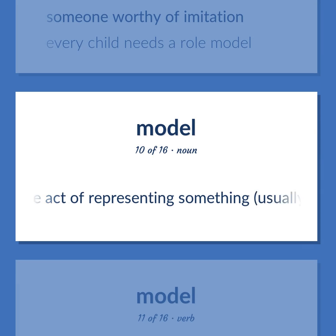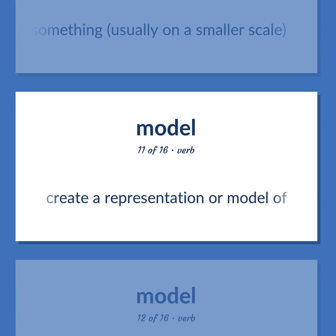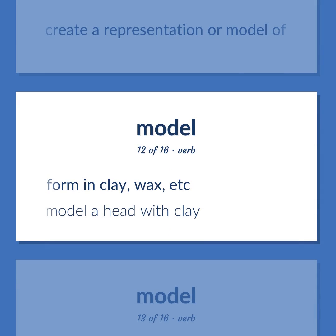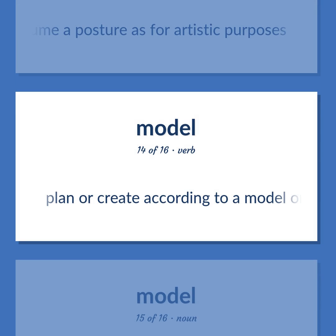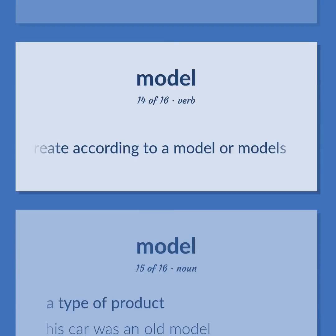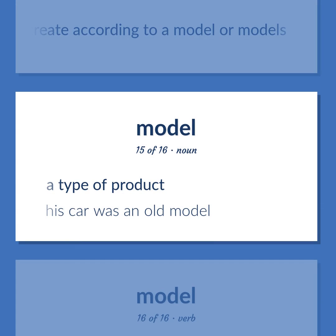Model: the act of representing something, usually on a smaller scale. Create a representation or model of. Form in clay, wax, etc. — 'Model a head with clay.' Assume a posture as for artistic purposes. Plan or create according to a model or models. A type of product — 'His car was an old model.'